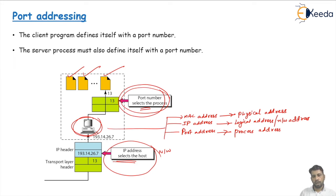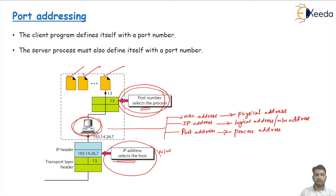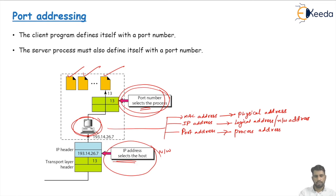We combine the IP address and the port number to uniquely identify your connection to the server — that is called socket addressing. Port addressing is very important because it identifies the process running in your computer, not just your computer itself. It identifies the working programs in execution in your computer, which is why we use port addresses.